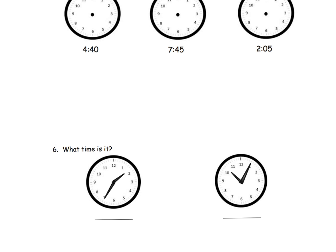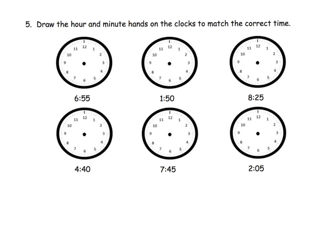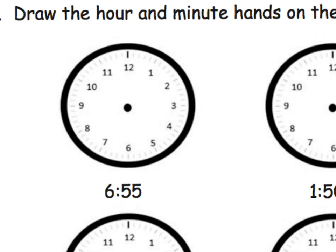On the last slide, let's draw the hour and minute hands — the applet is a great way to help our students with this. For 6:55: the minute hand is easy, we know that's going to go to the 11. What about the hour hand? It's not going to go directly to the six — it needs to go beyond the six because we are almost to seven o'clock, so I'm going to draw the hour hand almost to seven.